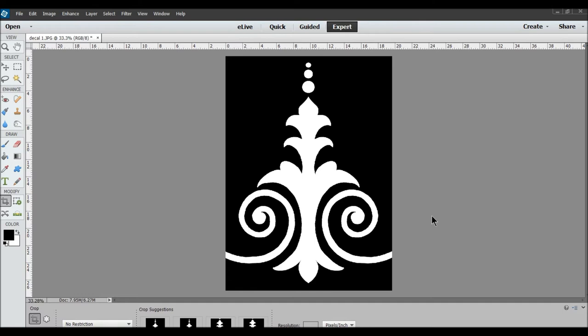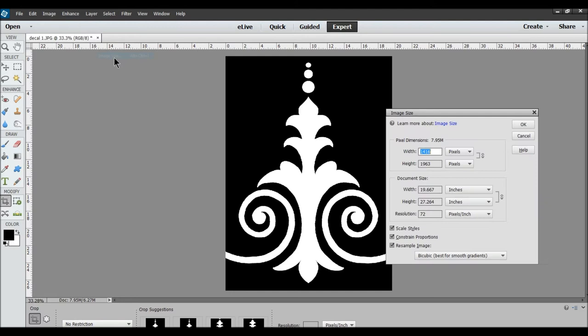The last thing we need to do before printing is to resize it so it's the correct size to match the decal on the machine. So, image, resize, image size. Now I've measured it on mine, and it needs to be about two inches across. And we'll set it at 300 dpi. There we go. File, save. And now we can print it.